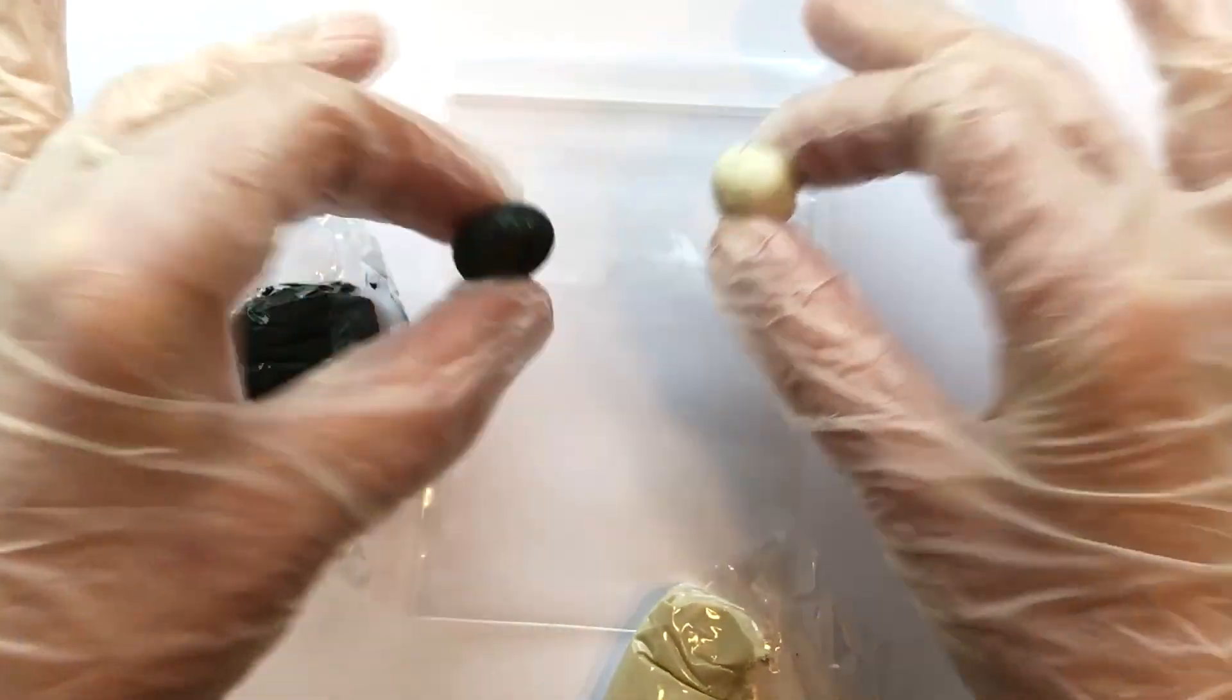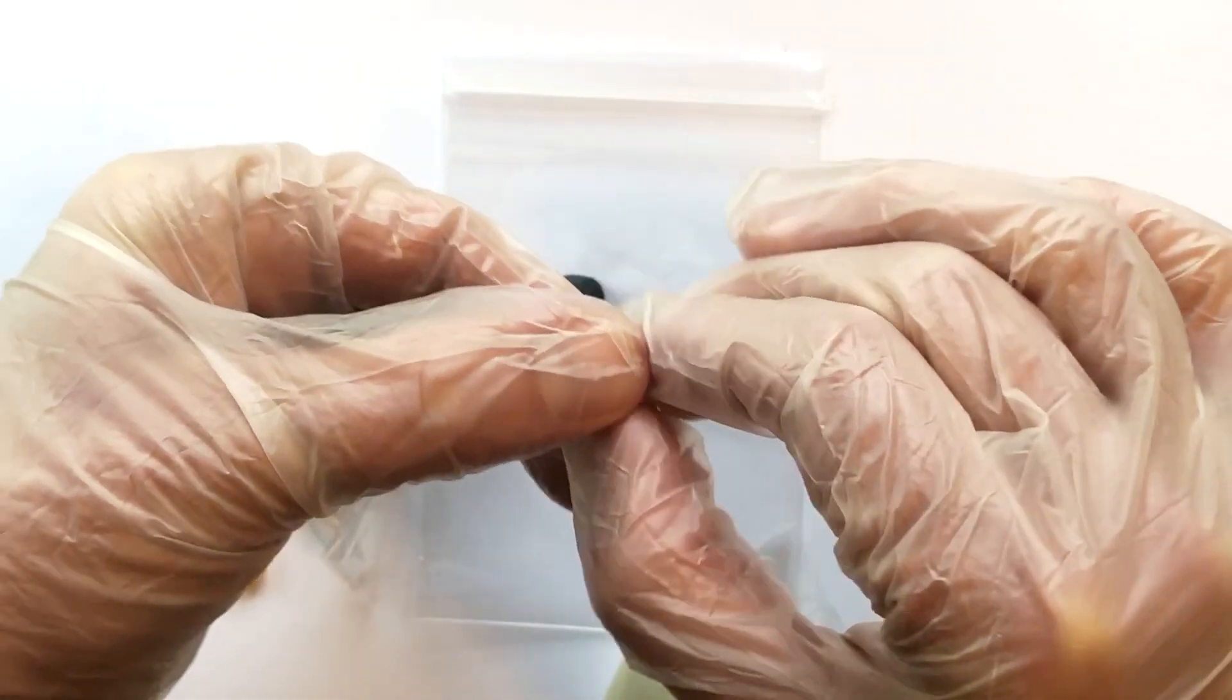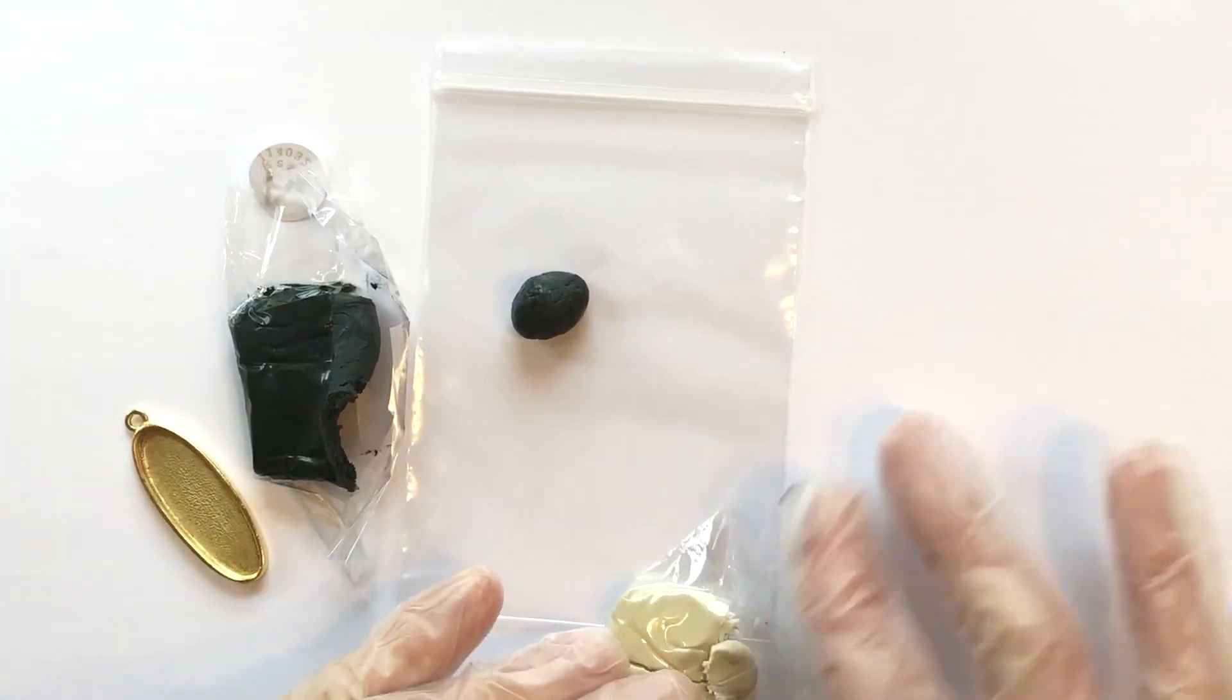Pull off about a large blueberry-sized ball of A and a large blueberry-sized ball of B. See how equal those are in size. I can see that my B is a little bit more than it needs to, so I can put back a little bit.